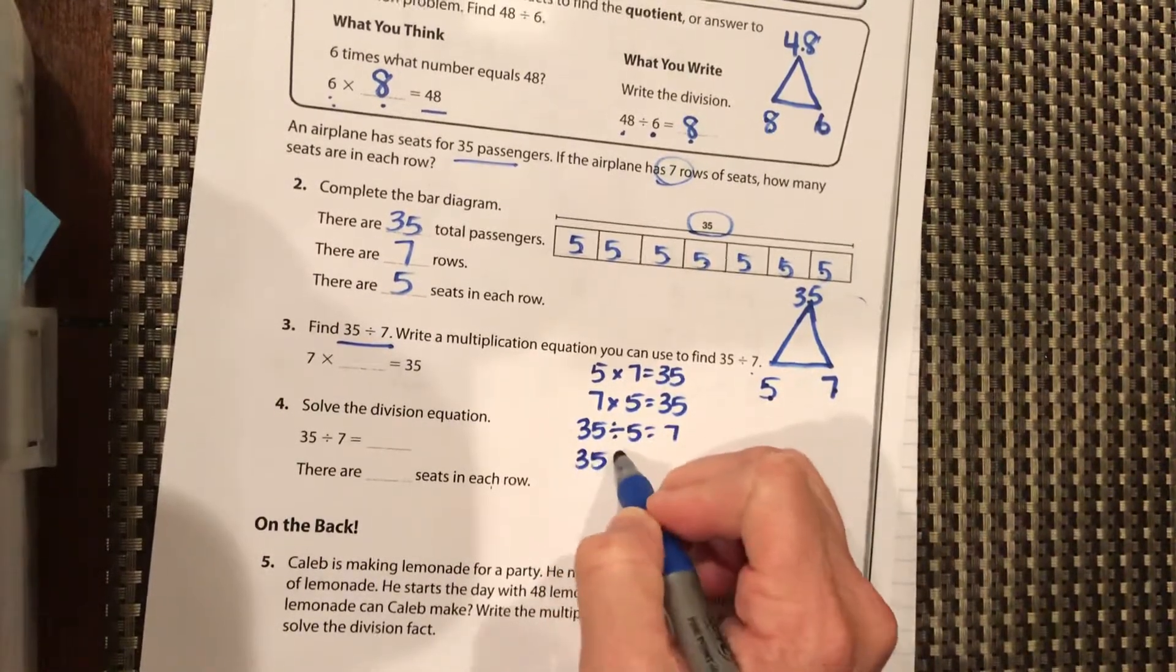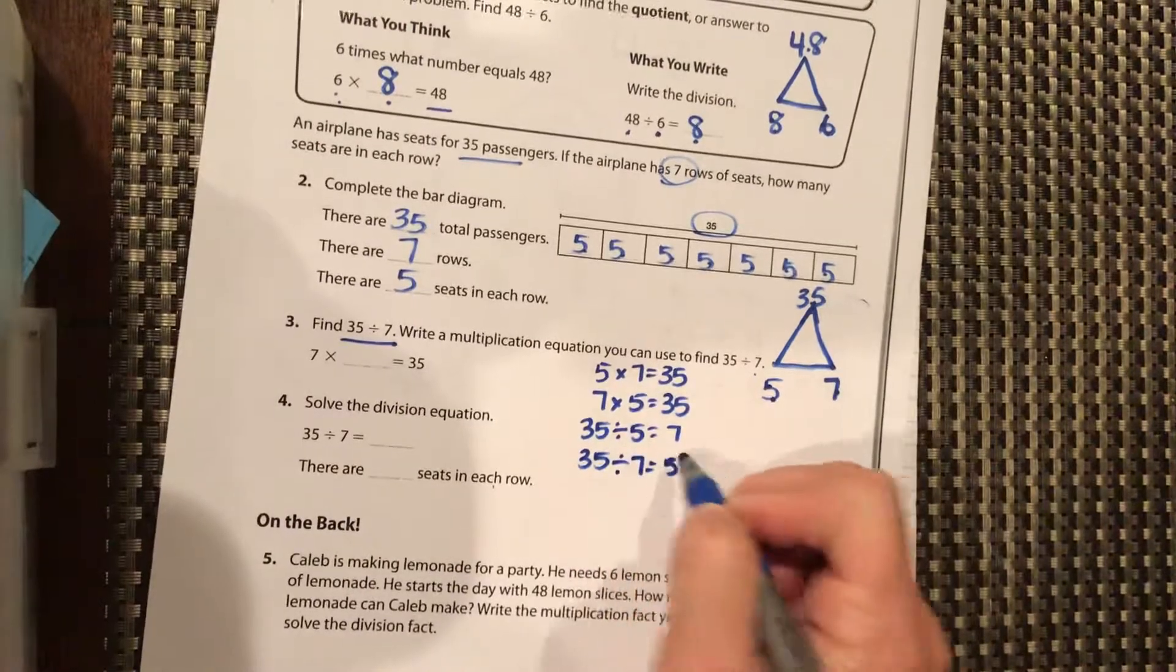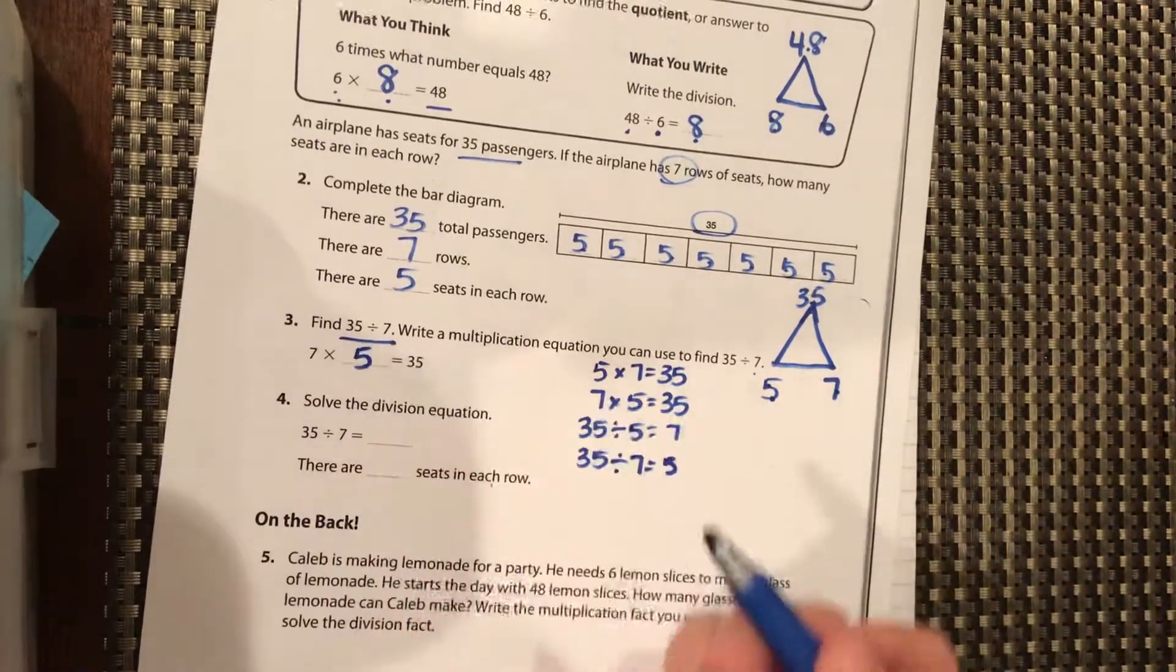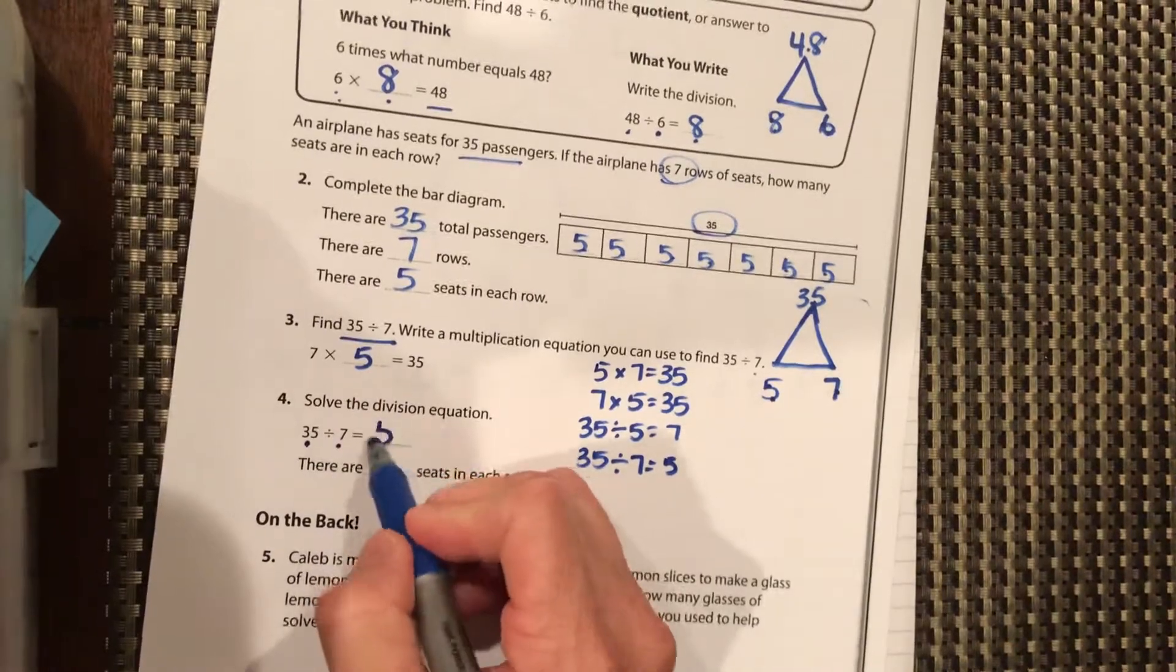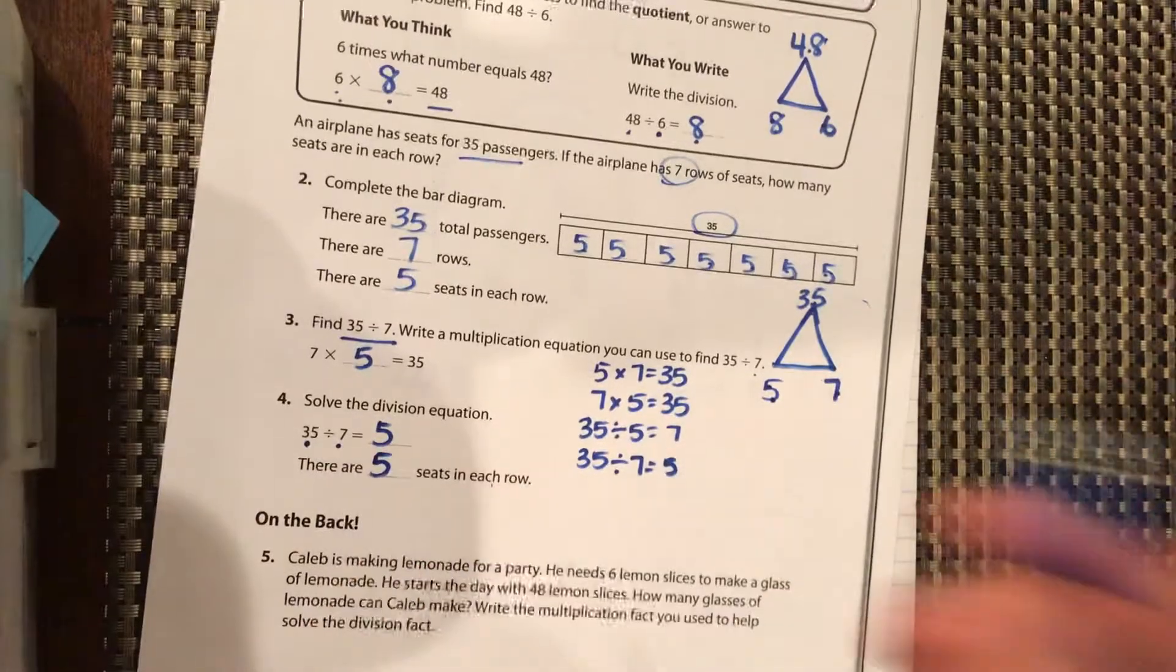And 35 divided by 7 equals 5. So 7 times 5 equals 35, therefore 35 divided by 7 equals 5. There are 5 seats in each row.